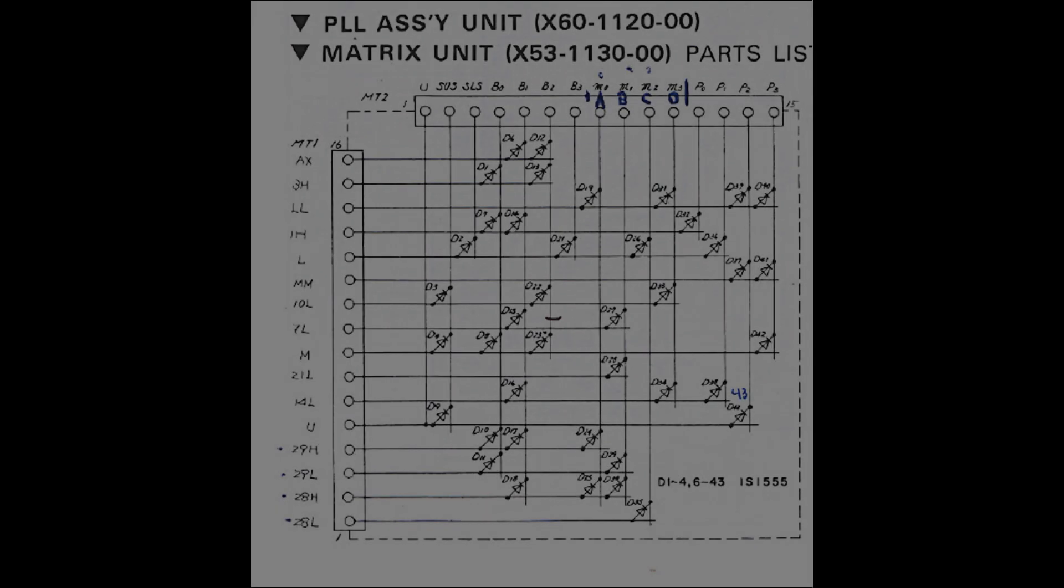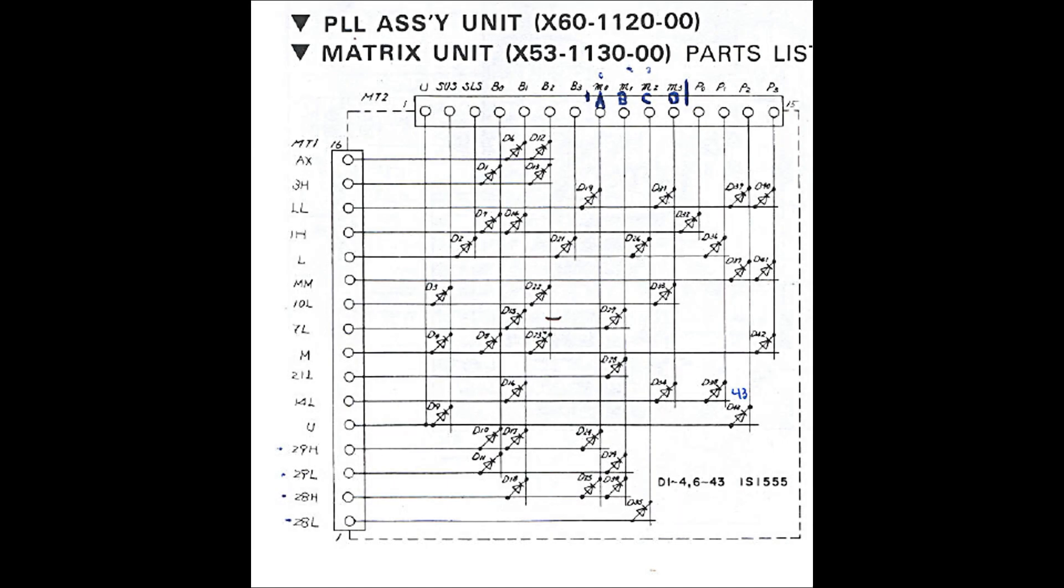The diode matrix is just a bunch of small signal diodes that takes a positive voltage coming from the band switch active line and brings that voltage to one or more outputs.